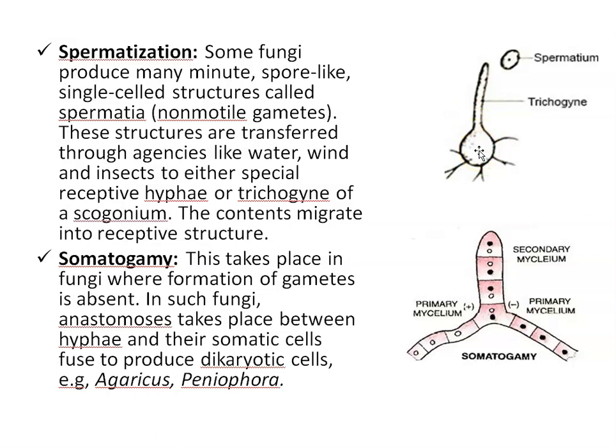The next method is somatogamy. Somatogamy takes place in fungi where formation of gametes is absent. Here, anastomosis takes place between hyphae — meaning two somatic cells fuse to produce dikaryotic cells. It is commonly found in Agaricus.